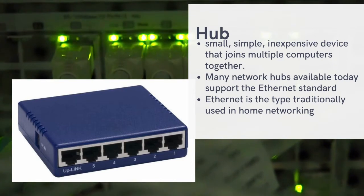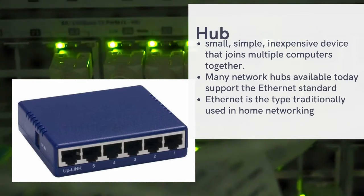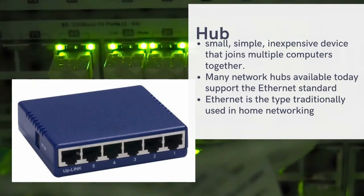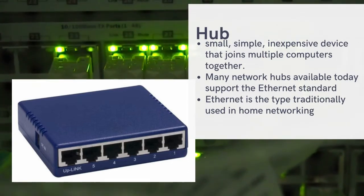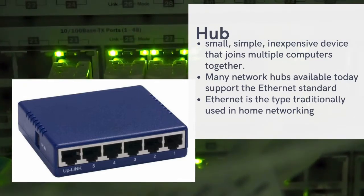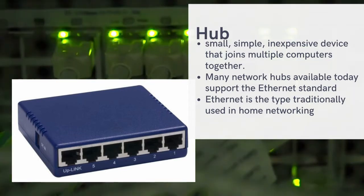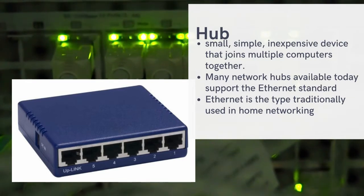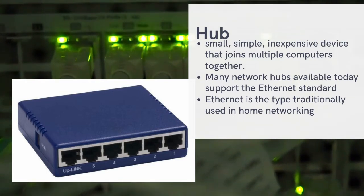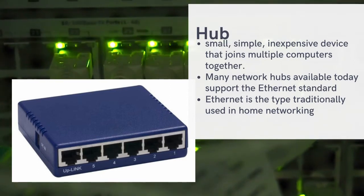The hub connects computers together using a UTP cable. We connect one end of the cable to the computer and the other end to the hub. For example, if Computer A sends data to Computer B, the data goes to Computer B — but it also replicates, so Computer C also receives that data.